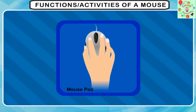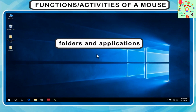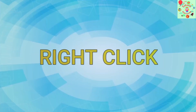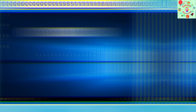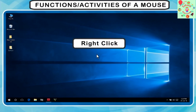The second function is double click. When you quickly press the left mouse button twice, it is called a double click. This action is used to open a file or an application.